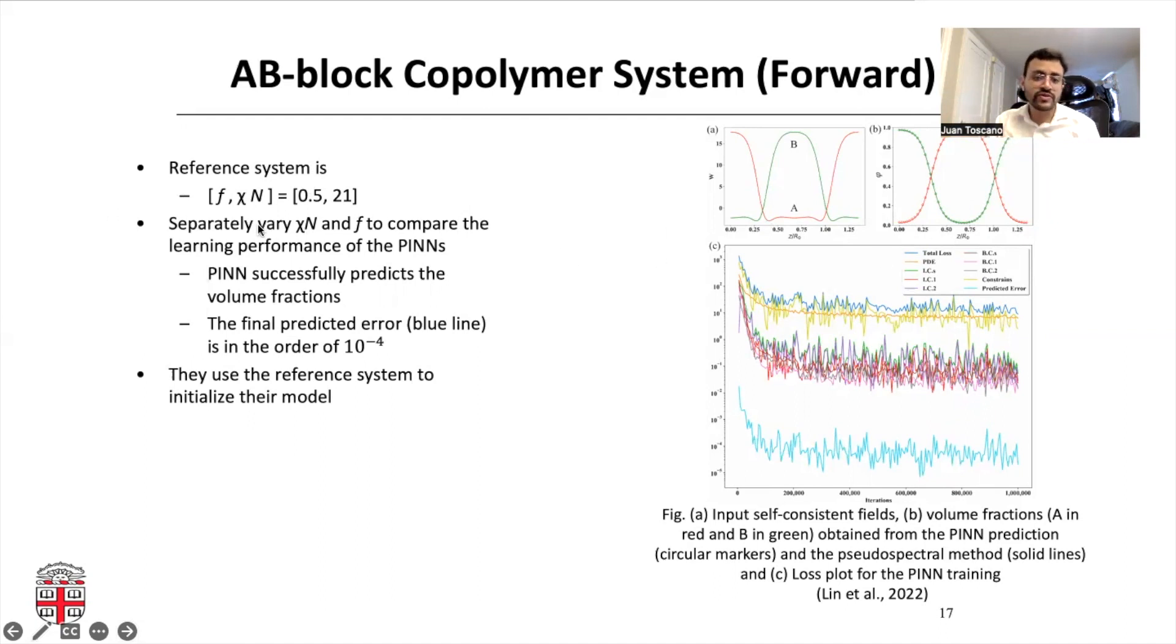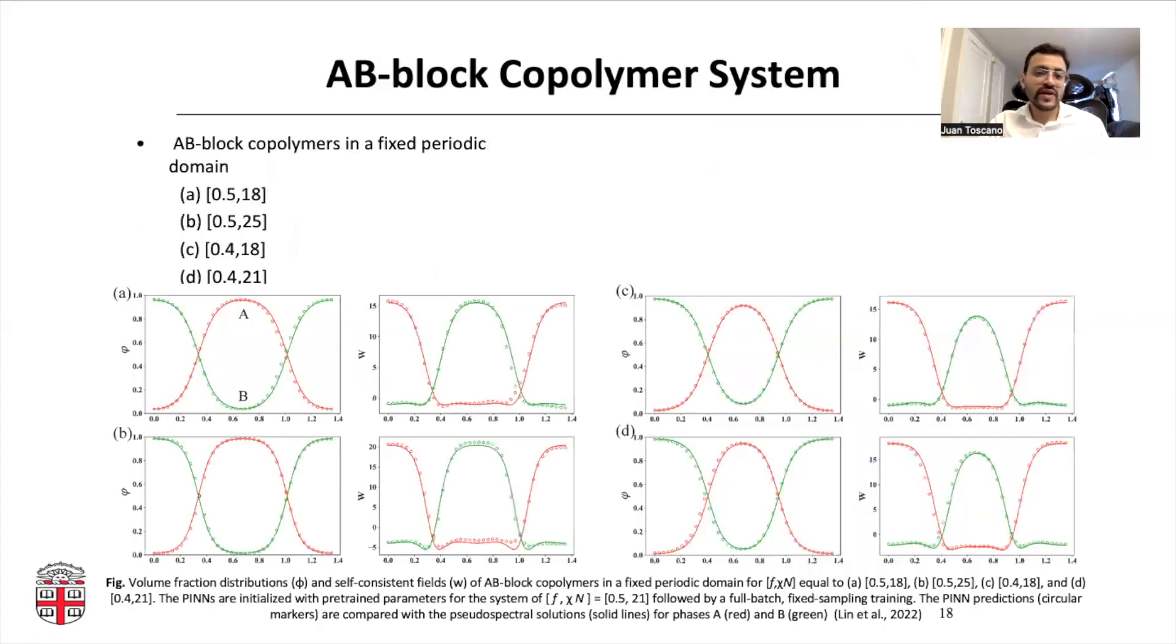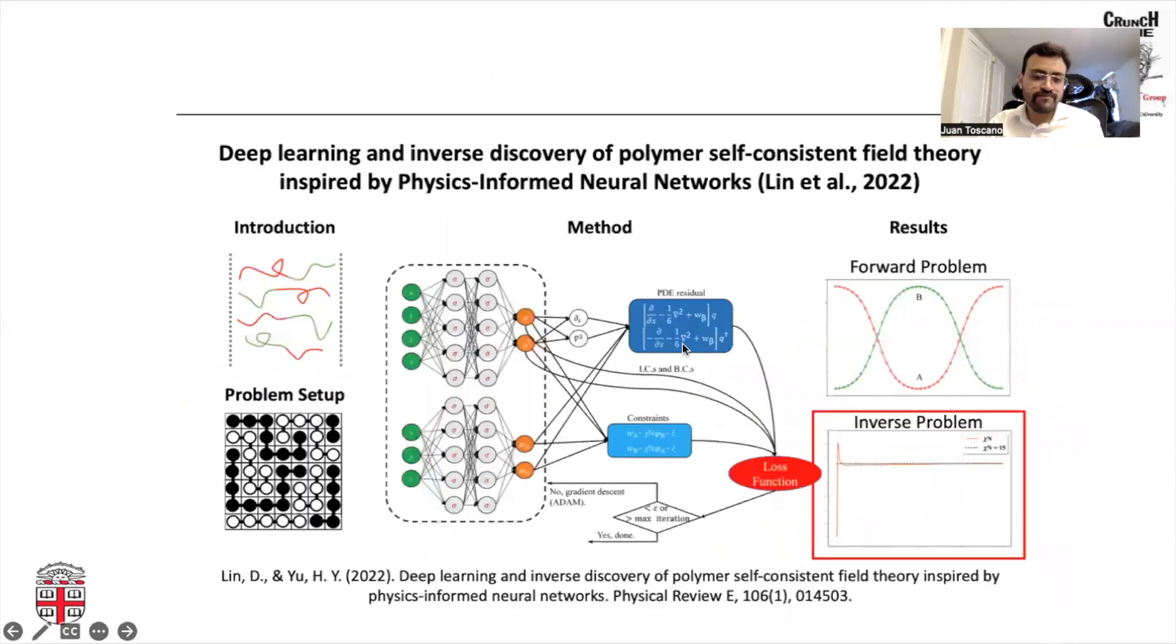By the way, they characterize the system using these two parameters, which is remember that FN is the number of A polymers you have. And this XN is a Flory Huggins interaction parameter. Now, once the model knows the reference system, we can ask him new questions, like what happens if I change something? So now they ask the set of FN and the Flory Huggins parameters for different cases. You can see that the PINN, which once again is those red dots, and here in the volume fraction, you can see the PINN gets the results quite well.